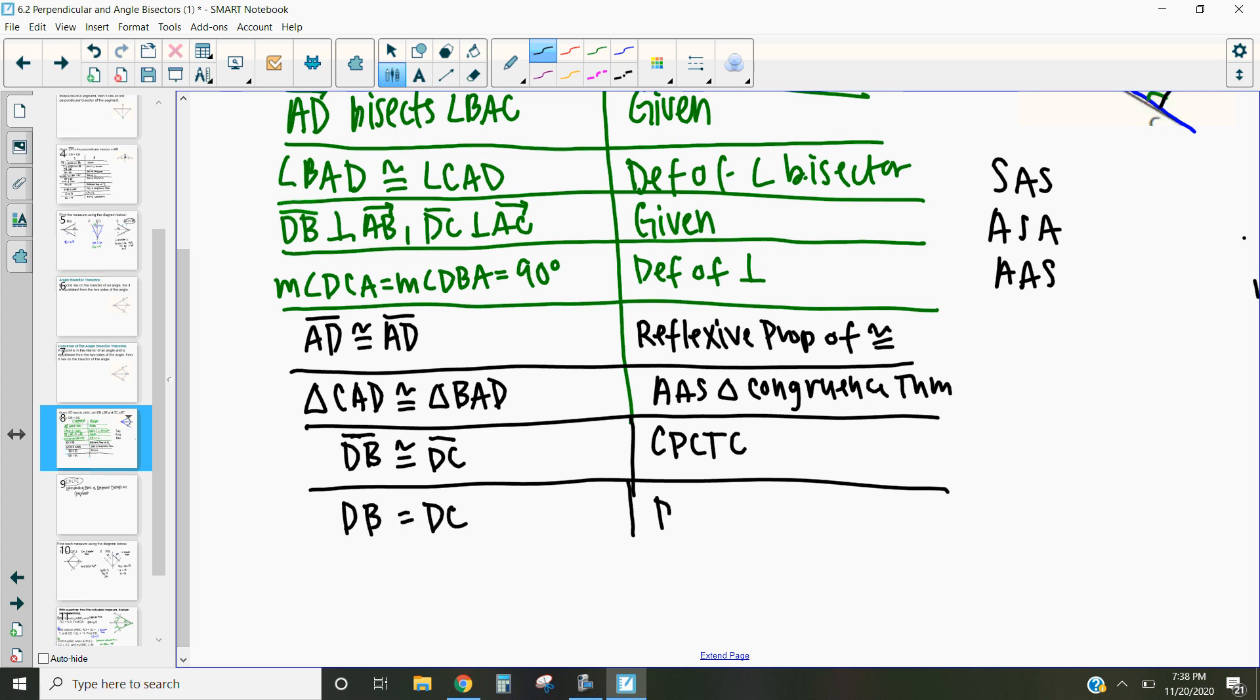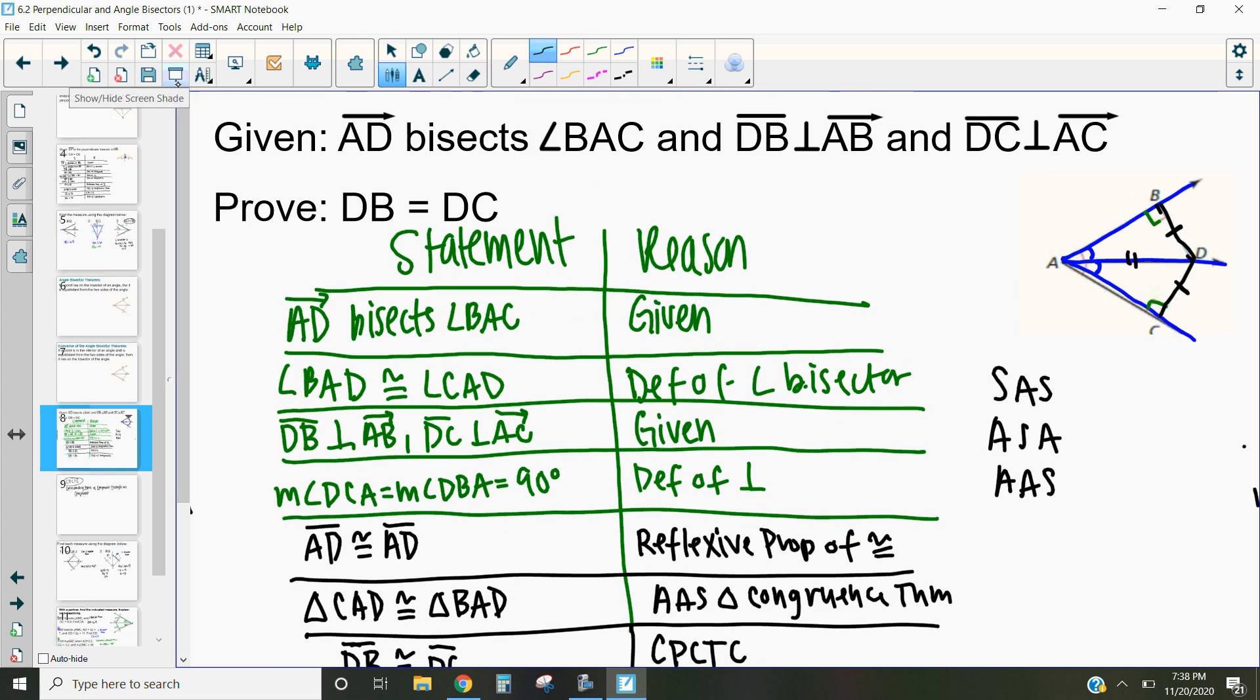And the reason why is because by the definition of congruence, two things that are congruent are also equal in length. And that is how we prove that the angle bisector theorem is true.